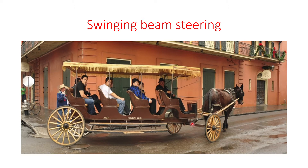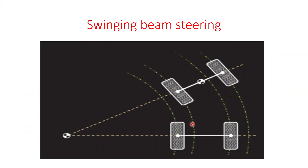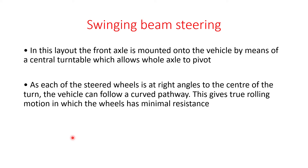In this figure, you can see the vehicle's front wheels, the axle which is pivoted with the turntable, and the rear wheels. There is an imaginary center IC around which the vehicle rotates. In a swinging beam steering system, the front axle is mounted onto the vehicle by means of a central turntable which allows the whole axle to pivot.